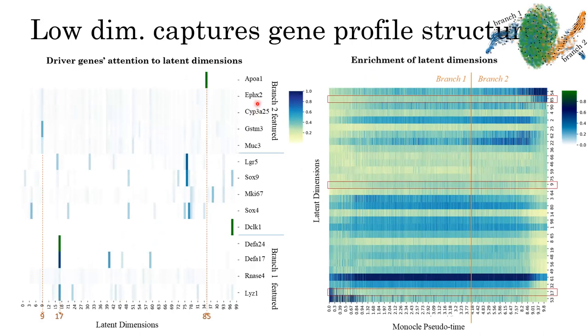Secondly, by using the reported driver genes from the scEU-seq dataset, we managed to observe the attentions. For example, the figure on the left side shows that the driver genes of branch two assigned the greatest attention to latent dimension number nine and number 85, while those driver genes of the first branch assign greatest attention to latent dimension 17.